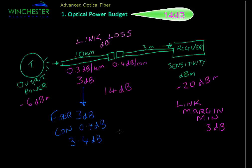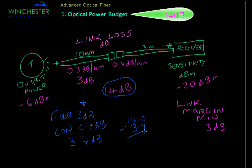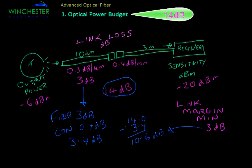Our allowable link loss — the power budget — is 14 dB. So we calculate how much extra we have over and above what we actually need: 14 minus 3.4 equals 10.6 dB. We were looking for a minimum of 3 dB, and we have 10.6 dB, so we have over 10 dB of link margin. This extra margin could be used for installing extra connectors, putting in more fiber, or maintaining it as a safety margin in case connectors get dirty or there's some degradation in the transmitters or receivers.